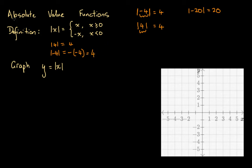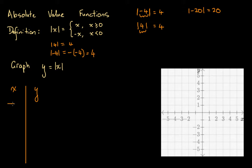That's a quick review of what an absolute value means. Now we're asked to graph y equals the absolute value of x. Let's construct a table of values where we substitute in some x values and determine their associated y values, and use these to construct points on the graph. We'll pick x values of negative 3, negative 2, negative 1, 0, 1, 2, and 3.